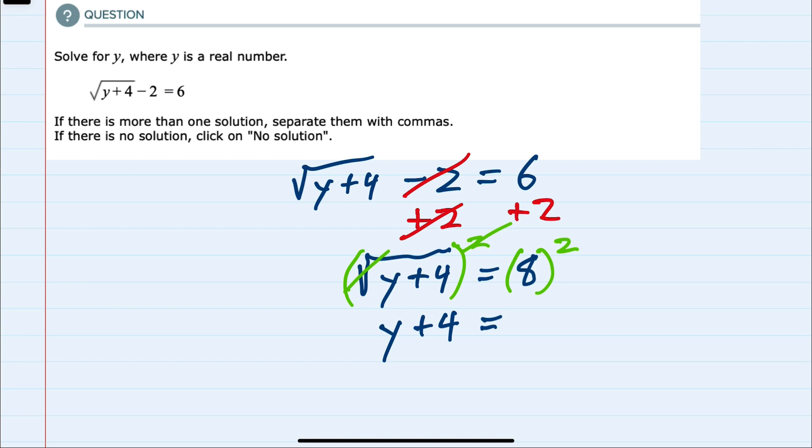Then on the right-hand side of the equation, the 8 squared is 64. And since I no longer have the radical, I can isolate the y by subtracting 4 from the left and the right of the equation.